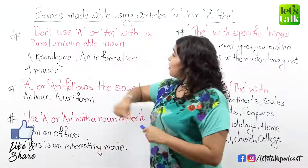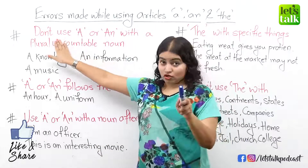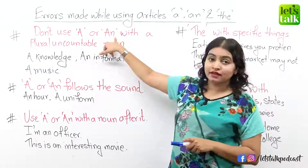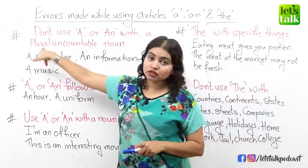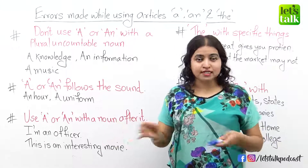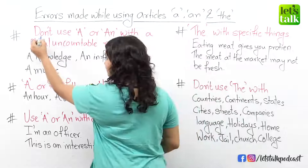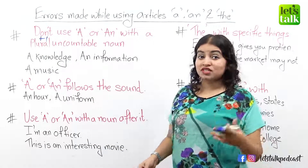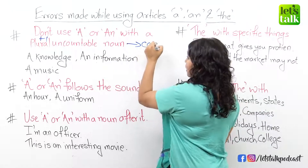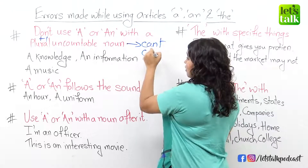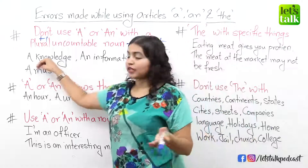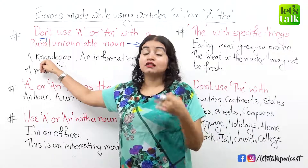Rule number one: you do not use the article a or an with a plural or uncountable noun. We all know what a plural noun is — anything more than one is a plural noun. But what is an uncountable noun? Nouns which cannot be counted are called uncountable nouns. For example, we have a noun like knowledge — this is an uncountable noun.